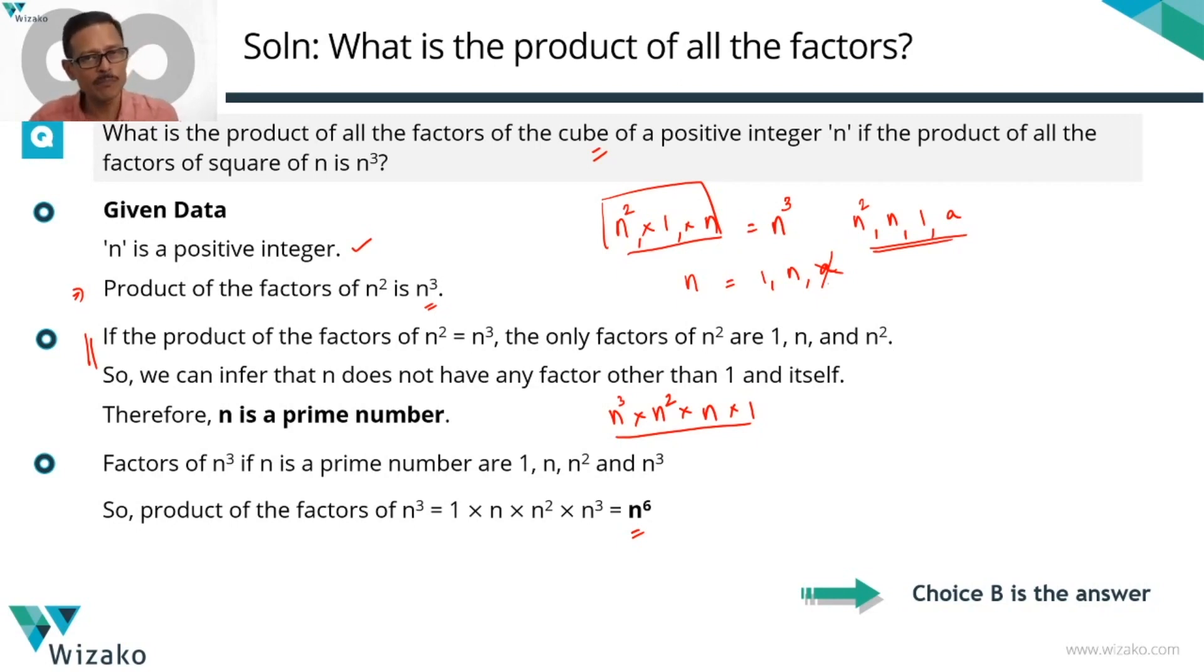Then it's only possible when n is prime. We establish that because if n is not prime, it's going to have an additional factor in addition to 1 and n which means that the product of the factors of n square cannot be n cube. It will be a times n cube at least or probably even more than that. Because it is this, we can say that a as another factor for n cannot exist which means n is prime.